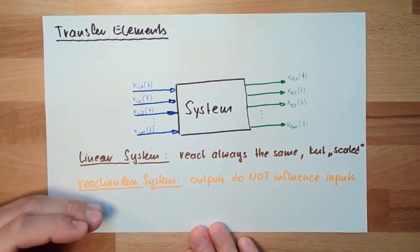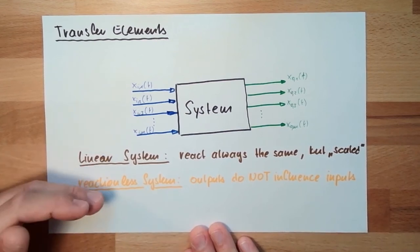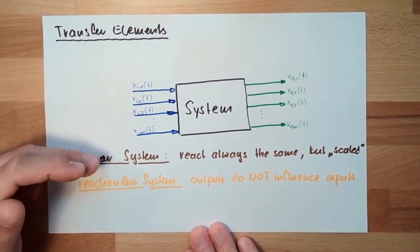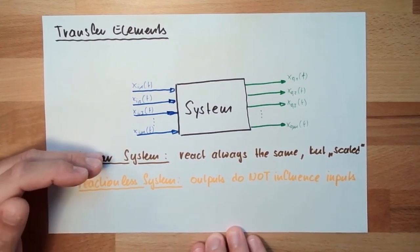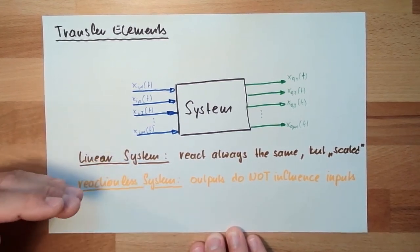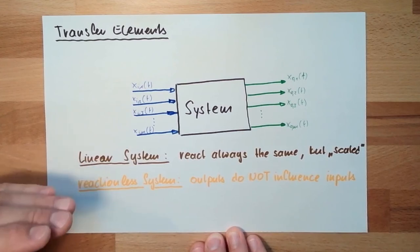So these two things need to be met. Linear system, reaction-less system. Like I said, linear system is not always given in reality. We have to take care that this system theory is only valid for the linear part.